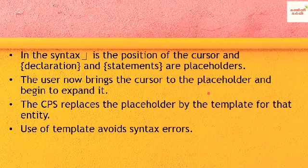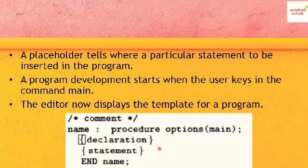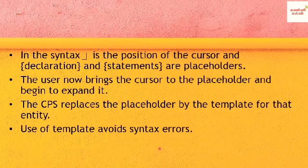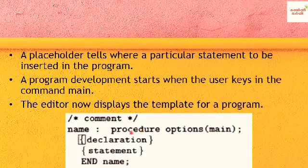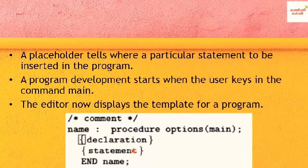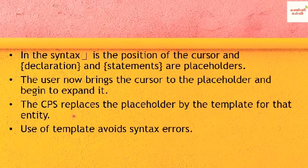The user brings the cursor to the placeholder and begins to expand it. The Cornell Program Synthesizer replaces the placeholder with the template for that entity. For example, if we use an if-else condition, the template will insert the if-else structure. The CPS inserts the if-else template at that placeholder position.